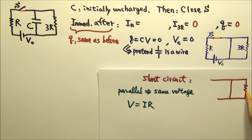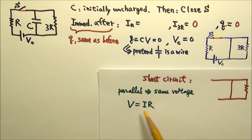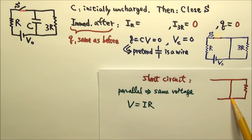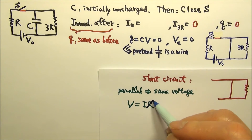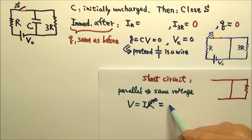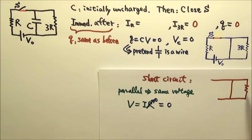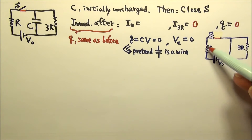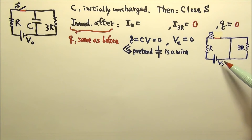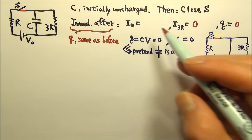Because these two are in parallel, they get the same voltage. Since V = IR and the wire has zero resistance, R being zero guarantees the voltage to be zero. That means the 3R resistor also gets zero voltage, which means it gets zero current. So there is only current in the R loop, which means the current would be V₀ divided by 1R.